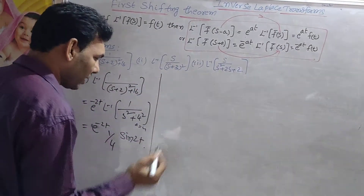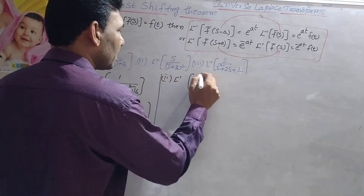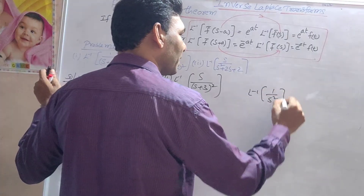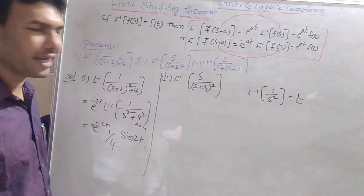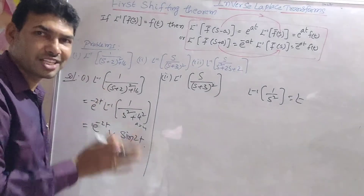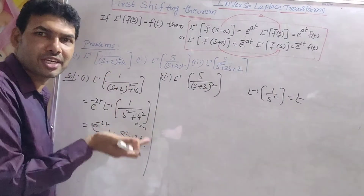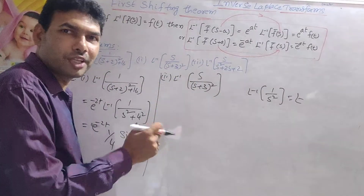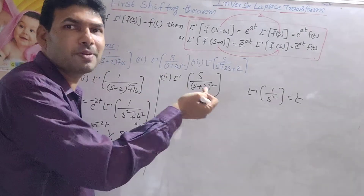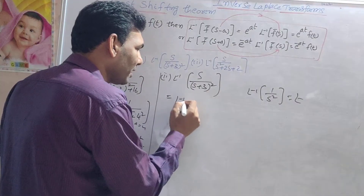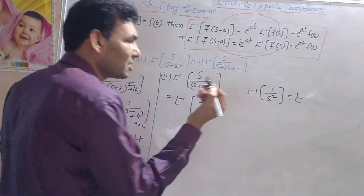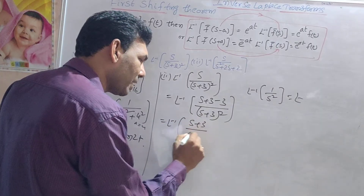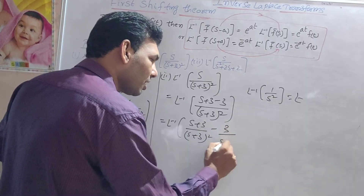Second problem: L inverse of s by (s plus 3) whole square. In this function, the formula to use is L inverse of 1/(s²) = t. But the numerator is s, not a constant. So we rewrite the numerator: s equals (s plus 3) minus 3. So we split it as L inverse of (s plus 3) by (s plus 3)² minus 3 by (s plus 3)².